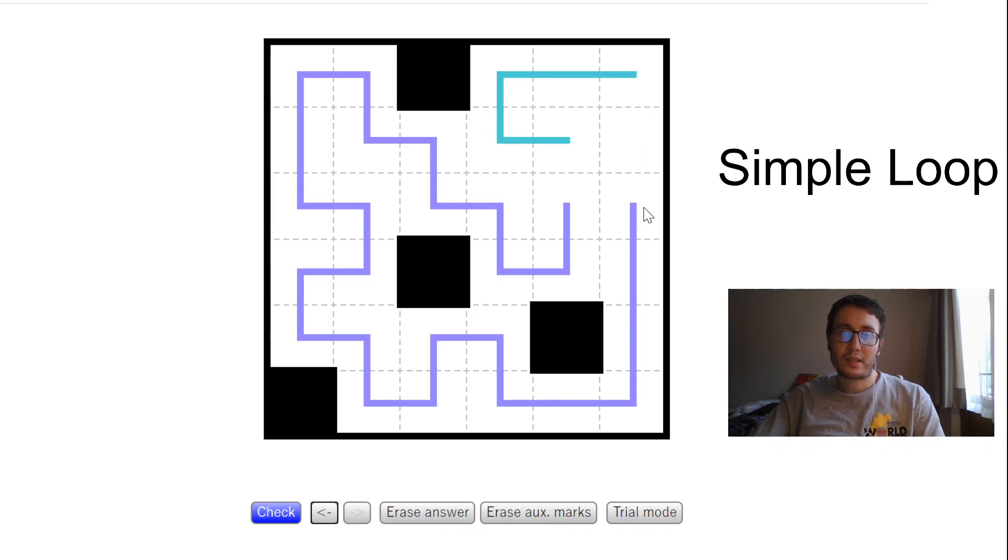And the other rule is that you need to have a single loop. So now here we have loops, but we have two loops. So this is not allowed as well. So the single unique solution to this puzzle is this. And how do we get this?